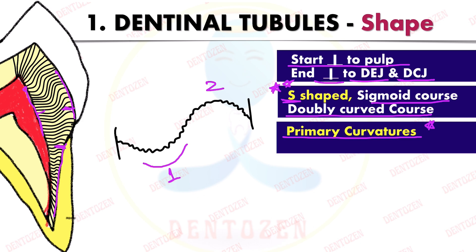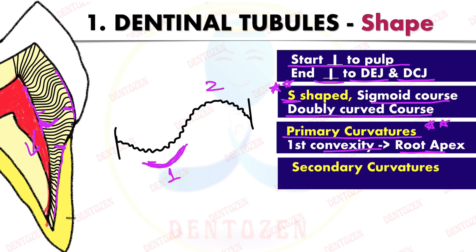The first convexity of the tubules is always directed towards the root apex, as you can see here. While drawing the diagram you have to keep this in mind and draw the first curvature towards the root apex. There can be secondary curvatures too.